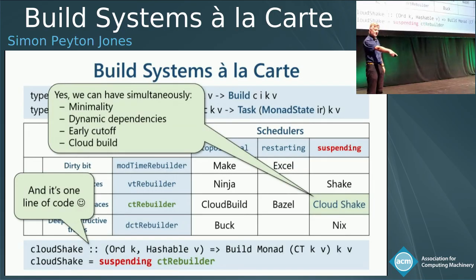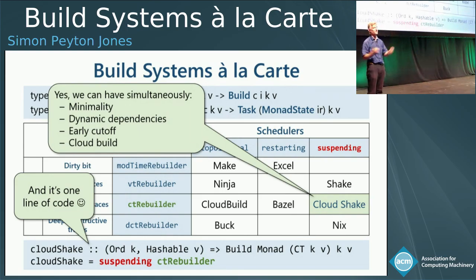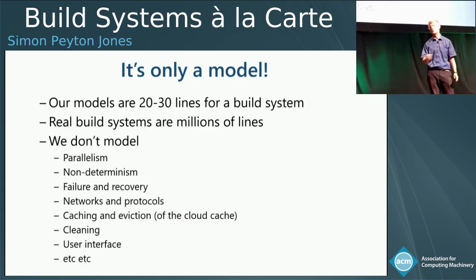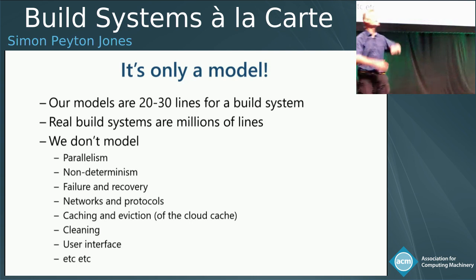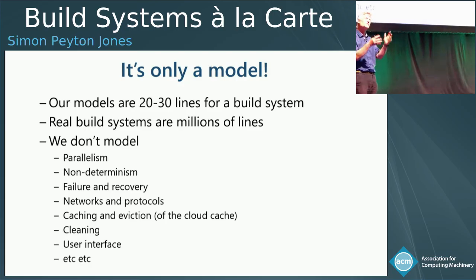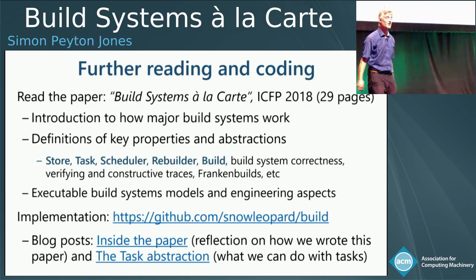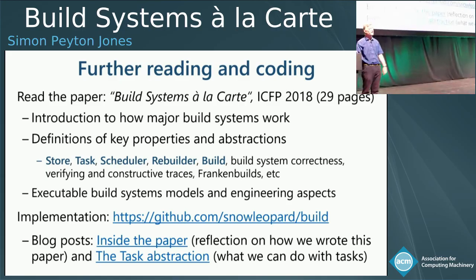This is a one-line build system. All of the build systems in the paper — and there are quite a few — are described in a dozen or so lines of Haskell. They're all statically typed, executable, and available from an open source repository. You can try them out and try other variations. But they are only models — you can't build a real build system in 20 lines. Real build systems are hundreds of thousands of lines of code and do tons of stuff we're not modeling: parallelism, non-determinism, failure and recovery, distributing across a data center. It's only a model, but that's a strength as well as a weakness because it's small, intellectually tractable, and you can invent new things and then scale them up.